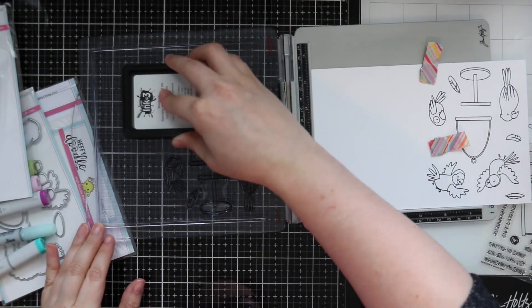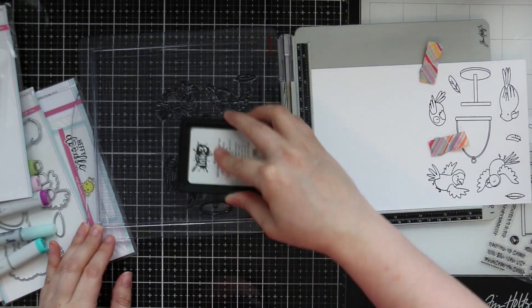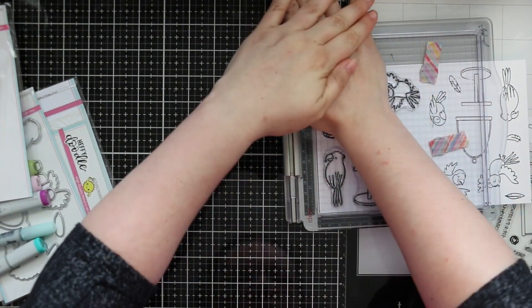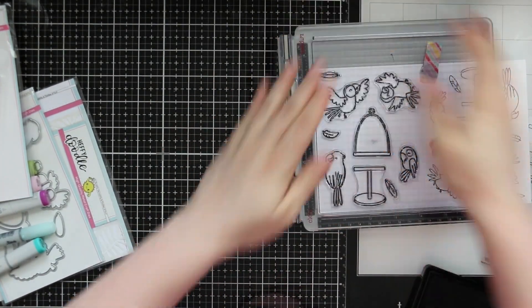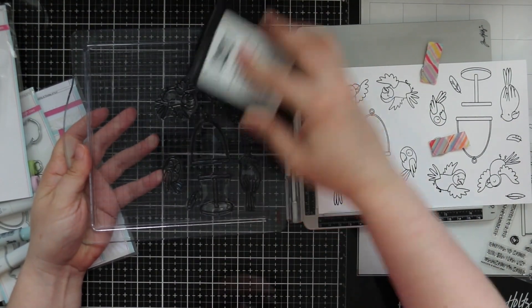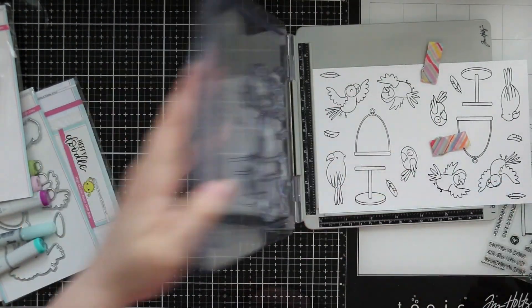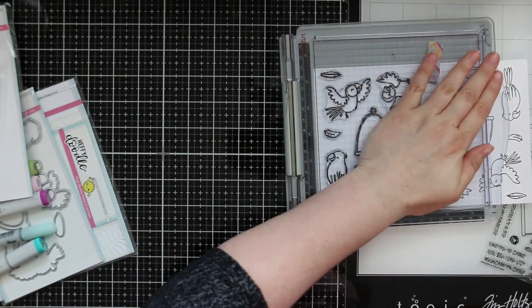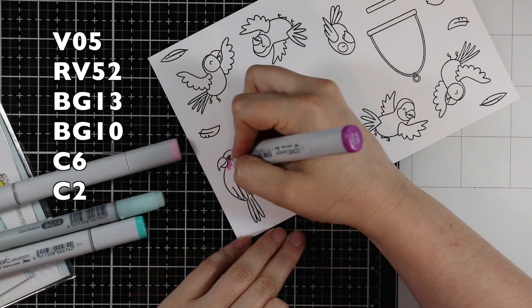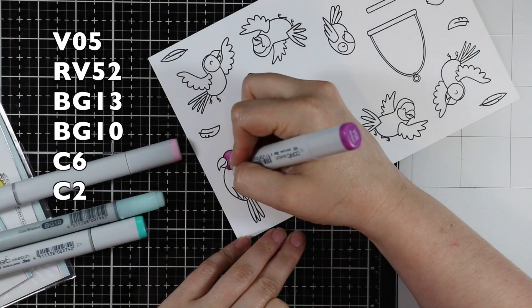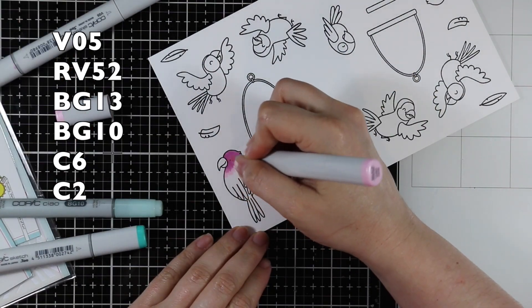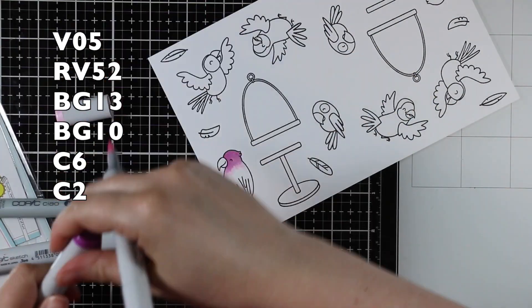Normally I would Google image search tropical birds to get ideas for color combos. But the more I thought about parrots and lovebirds and all those things with so many different colors, I was like, the sky's the limit, let's just have fun with it. So I made up my own color combos.